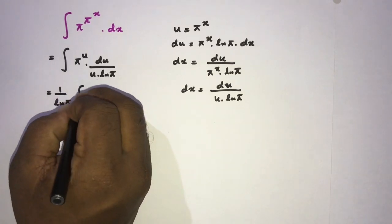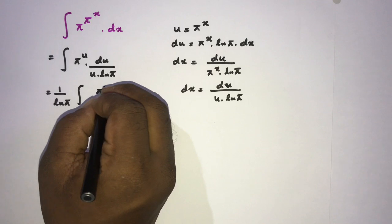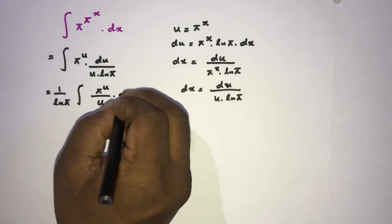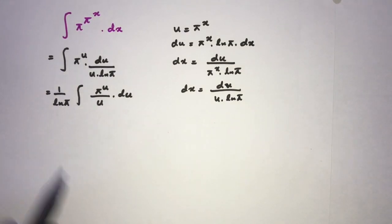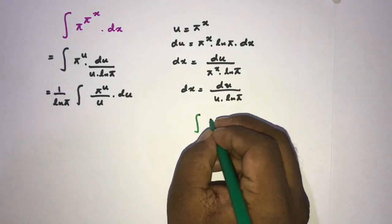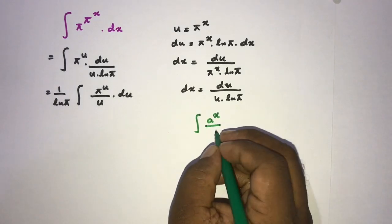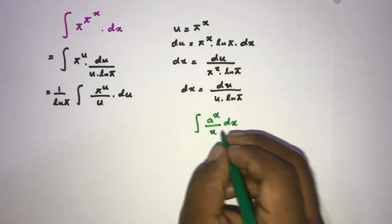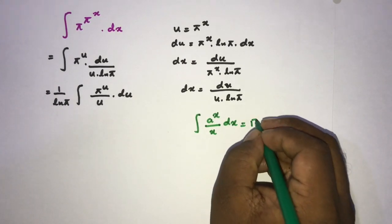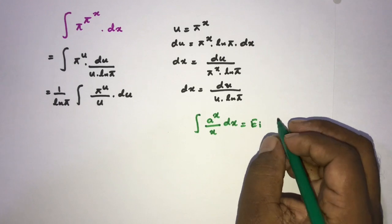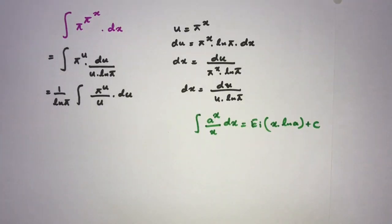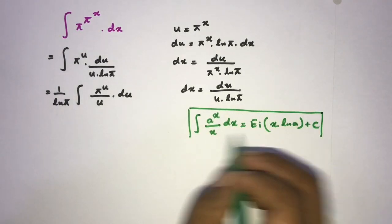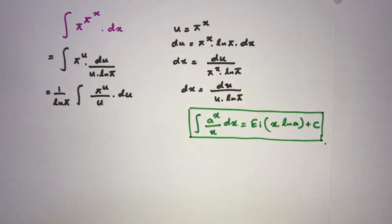This is another interesting integral. We use a special function identity: the integral of a to the x over x dx equals the exponential integral function Ei of x times natural log of a, plus C. Remember this identity — it is an important integral.